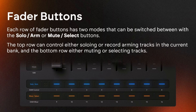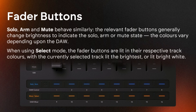Each row of fader buttons has two modes that can be switched between with the solo arm or mute select buttons. The top row can control either soloing or record arming tracks in the current bank, and the bottom row either muting or selecting tracks. Solo arm and mute behave similarly — the relevant fader buttons generally change brightness to indicate the solo, arm, or mute state. The colours vary depending on the DAW.